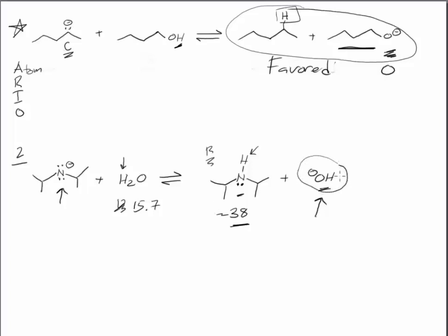And again, the O is more stable as an anion than the N is, according to the atom argument. The O is more electronegative. And so, we would circle the right side of this acid-base equilibria.